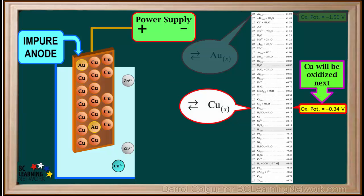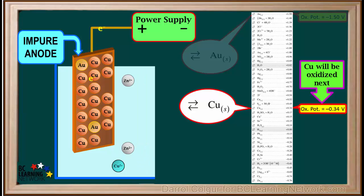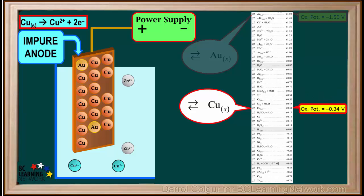The metal with the next highest oxidation potential is copper, with an oxidation potential of negative 0.34 volts. So, a copper atom will be oxidized to a copper 2 plus ion, which will leave the electrode and go into the solution. The half reaction for the oxidation of copper atoms at the anode is Cu gives Cu2+ plus two electrons. Copper atoms continue to be oxidized into copper 2 plus ions and go into the electrolyte solution.